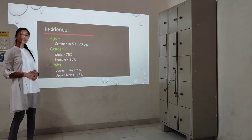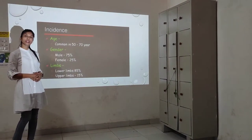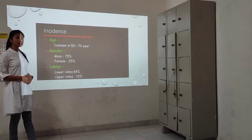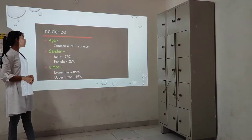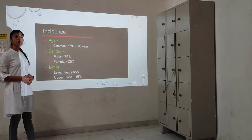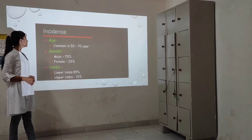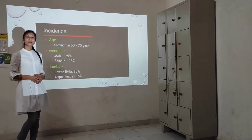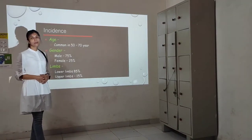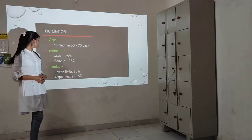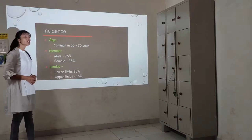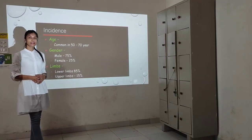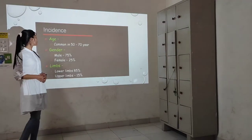What are the incidences of amputations? Regarding age, the most common age range is between 15 to 17 years. Regarding gender, it is more common in men as compared to females. Regarding limbs, lower limbs are more common as compared to the upper limb.